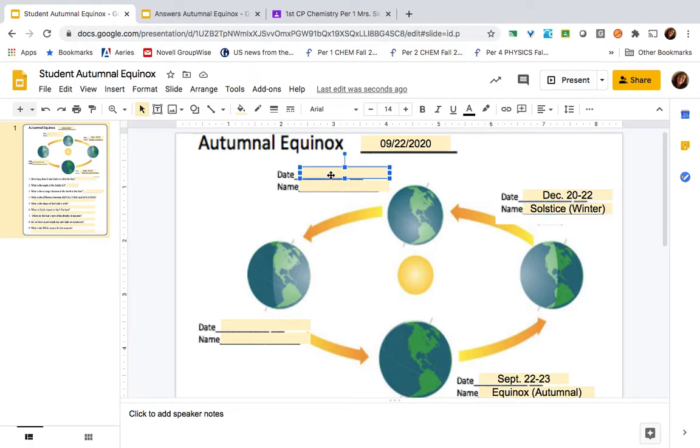And after that, we have the first day of spring, which occurs in March. And that is another equinox. But this time, we call it vernal equinox. And vernal has to do with green. And so in springtime, of course, everything starts getting green again.